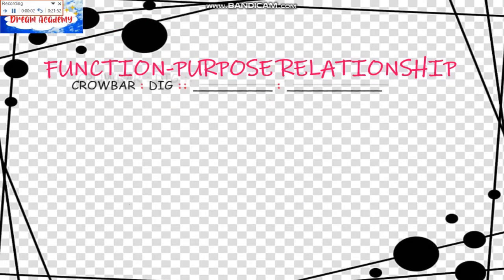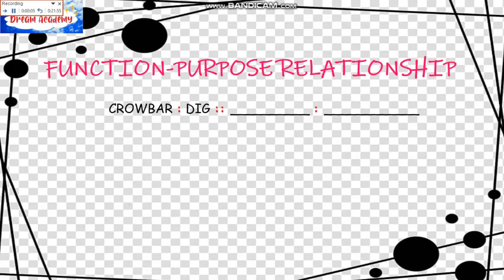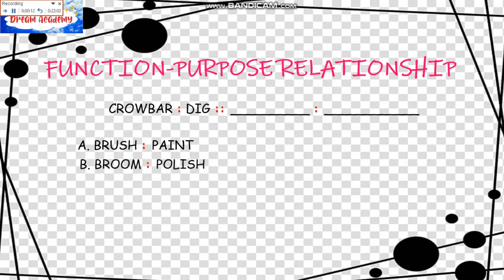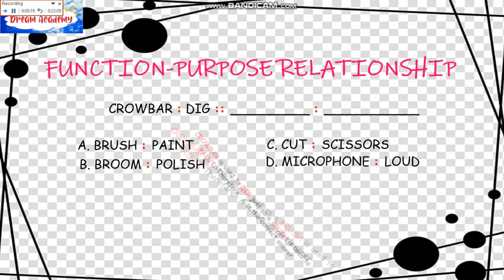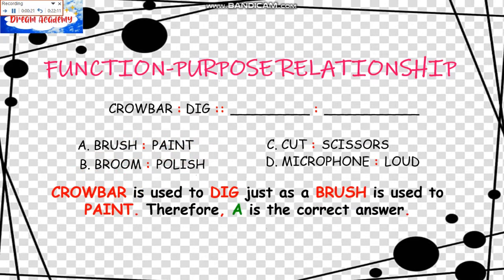We have the next relationship: the Function-Purpose Relationship. The example is: Crowbar is to Dig as blank is to blank. The choices are: A, Brush is to Paint; B, Broom is to Polish; C, Cut is to Scissors; D, Microphone is to Loud. Crowbar is used to Dig just as Brush is used to Paint. Therefore, A is the correct answer.